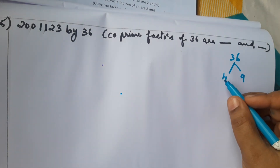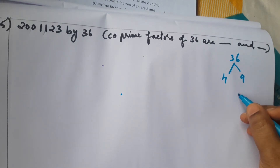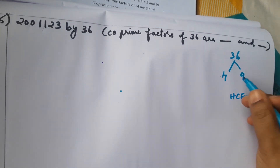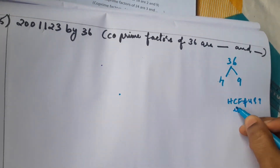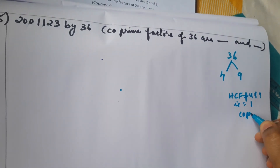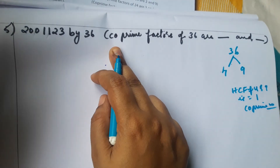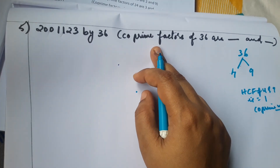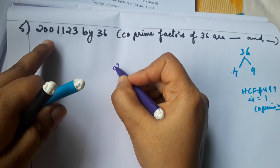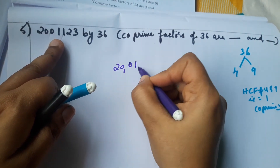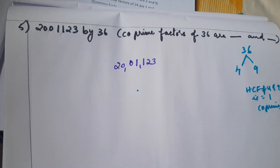Since HCF of 4 and 9 is 1, they are co-prime numbers. Now we check the given number 20,11,123 divided by 36 using the co-prime factors 4 and 9.